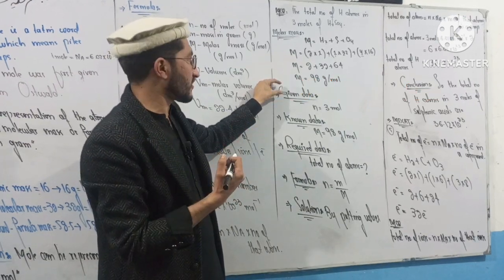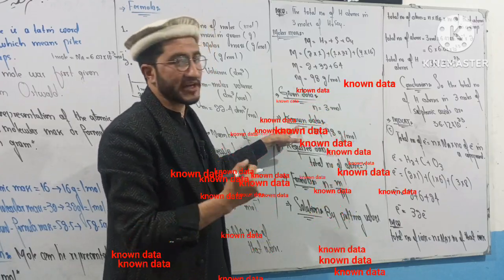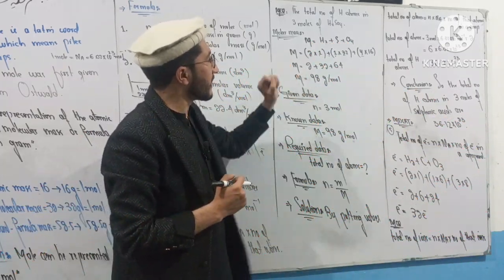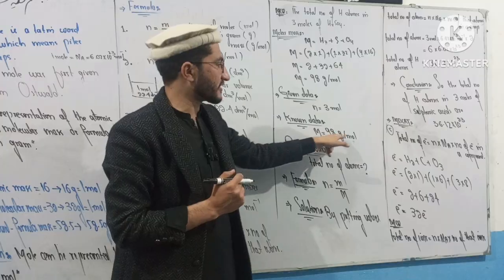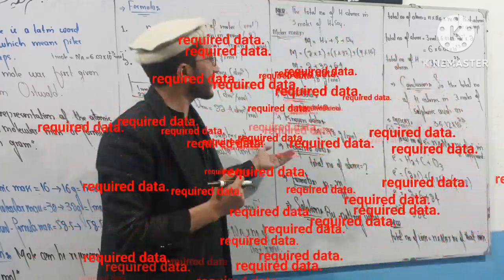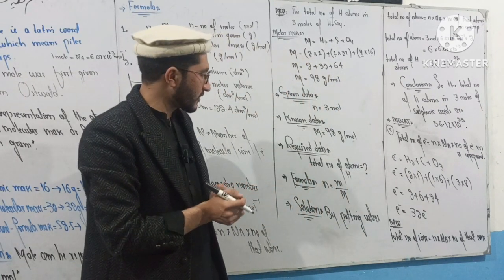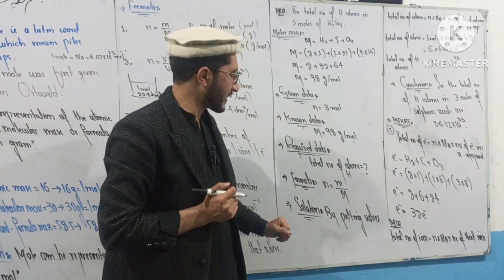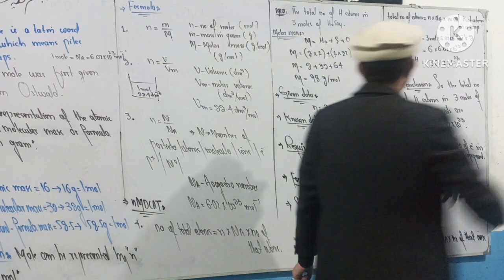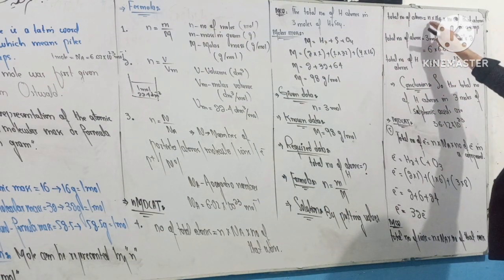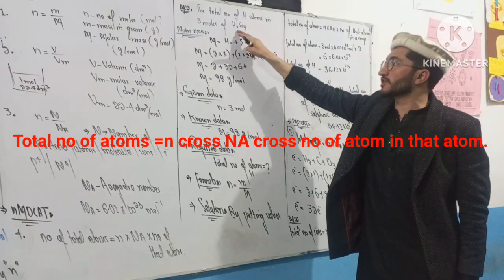Example problem: We are given 3 moles of sulfuric acid. The given data is n = 3 moles. The required data is the total number of hydrogen atoms. The formula is: total number of atoms = n × Nₐ × number of that atom in the compound.